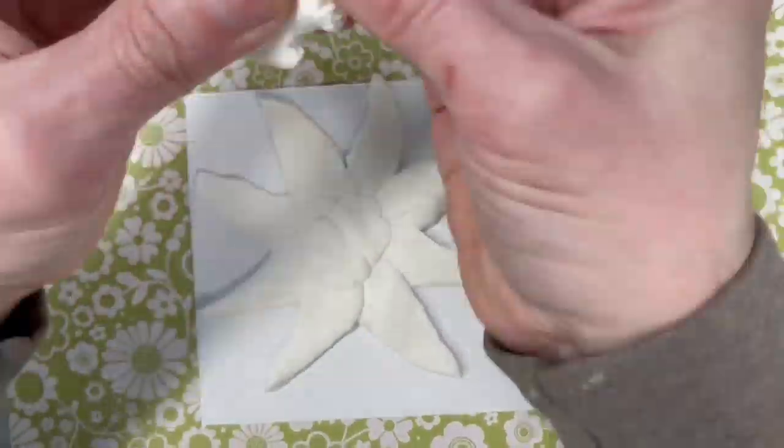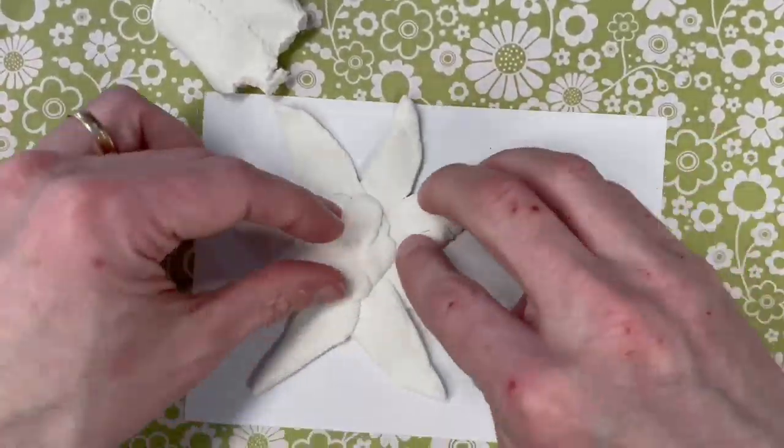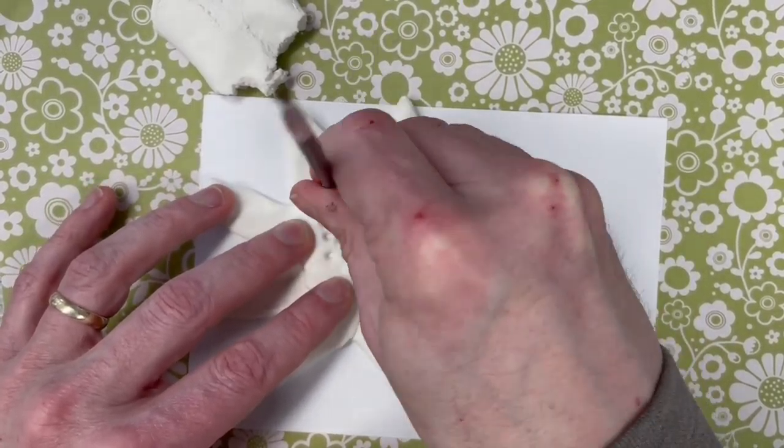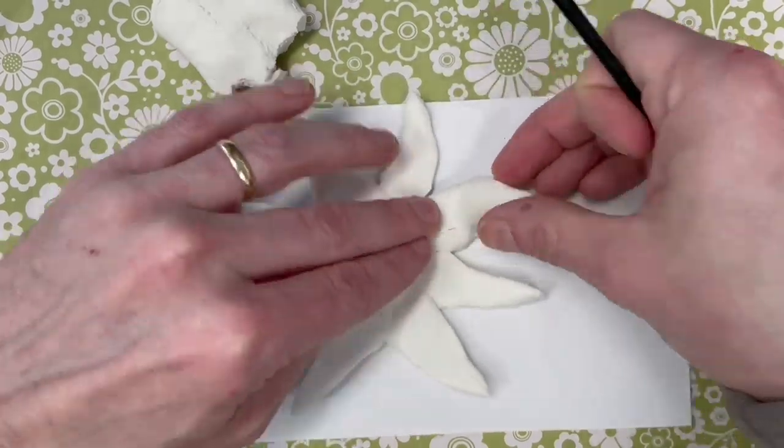Here I'm kind of building up the center once you have all those in place. Keep in mind that this is sped up four times, so I'm not actually this fast in real life. I'm using the end of my paintbrush here to make some textures like sunflower seeds.